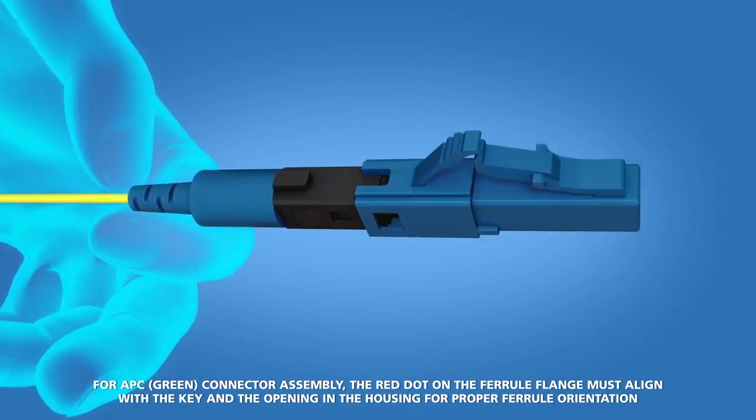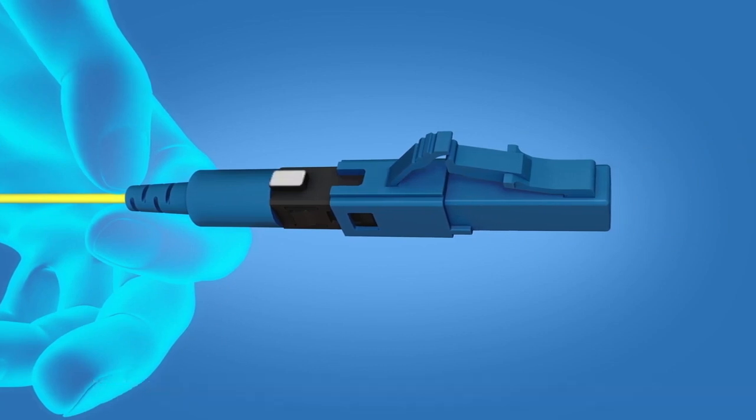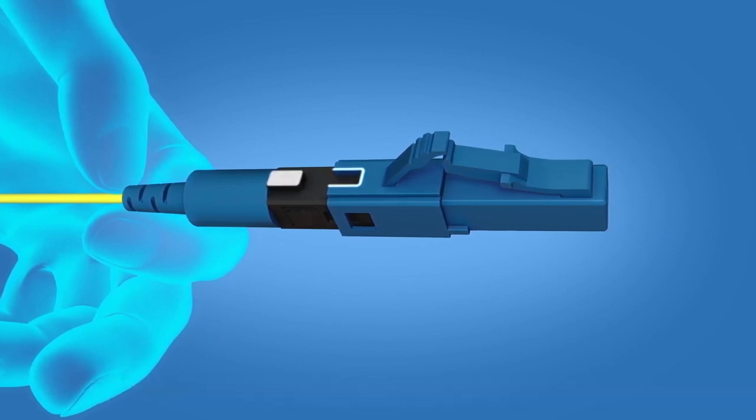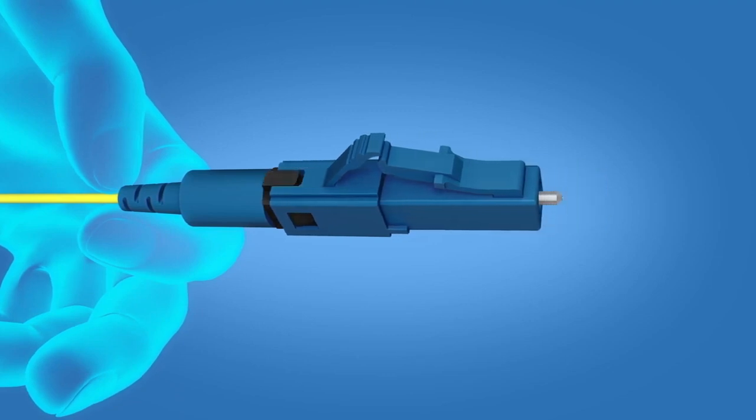Slide the connector housing onto the boot unit. Align the key on the boot and the opening in the connector housing. Push until a click is heard.